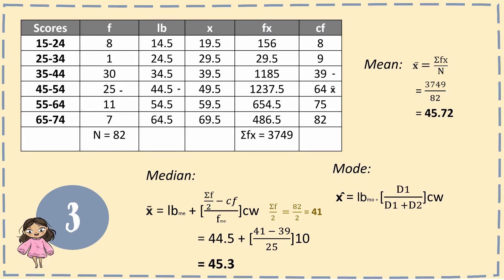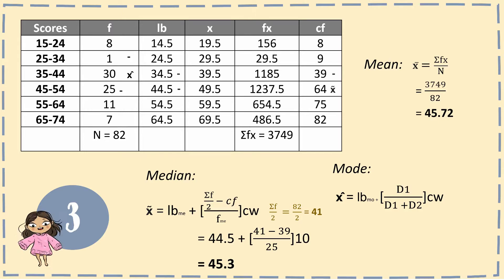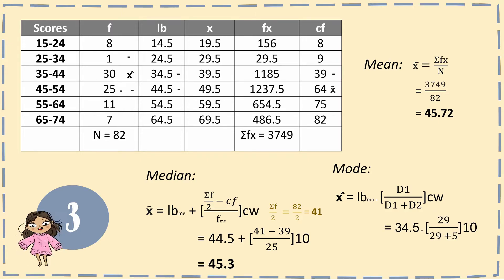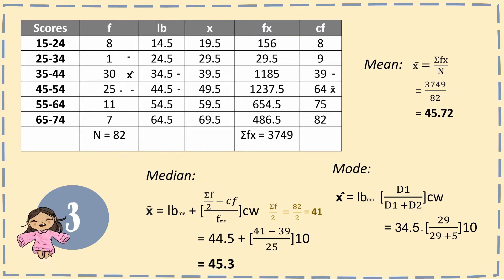Lastly, for the mode, the highest frequency is 30. D1 is 30 minus 1 equals 29, and D2 is 30 minus 25 equals 5. The lower boundary is 34.5 and class width is 10. So: 34.5 plus (29 over 29 plus 5) times 10 equals 43.03.